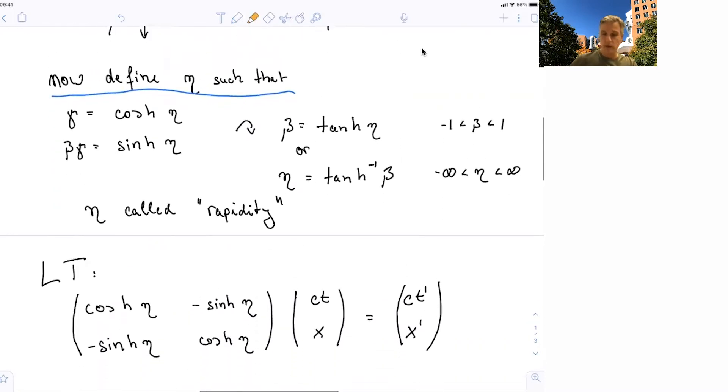So then we can rewrite our Lorentz transformation. Instead of writing gamma and beta gamma and minus beta gamma and so on, we can write this through the hyperbolic angle.